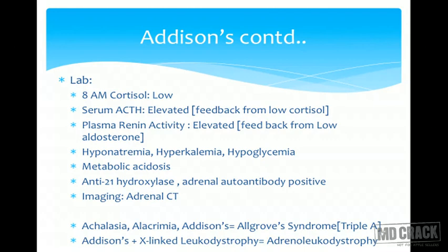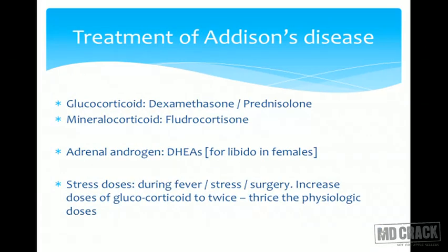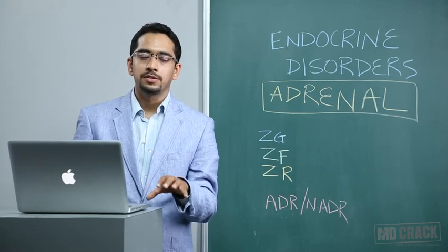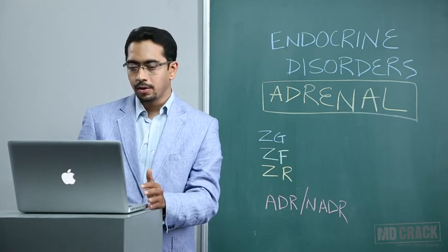Triple A syndrome, also called Allgrove syndrome, is the combination of achalasia, alacrima (absent tears), and associated Addison's. If we have X-linked leukodystrophy along with Addison's, with male affection, that is adrenoleukodystrophy. Treatment of Addison's is replacement of glucocorticoid with dexamethasone or prednisolone. In the growth phase, hydrocortisone may be preferred. Mineralocorticoid replacement is with fludrocortisone, and DHEA supplementation helps with loss of libido. Doses must be increased during stressful situations such as infection, surgery, or pregnancy.